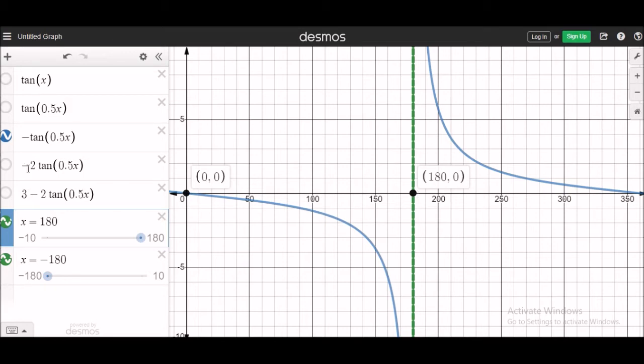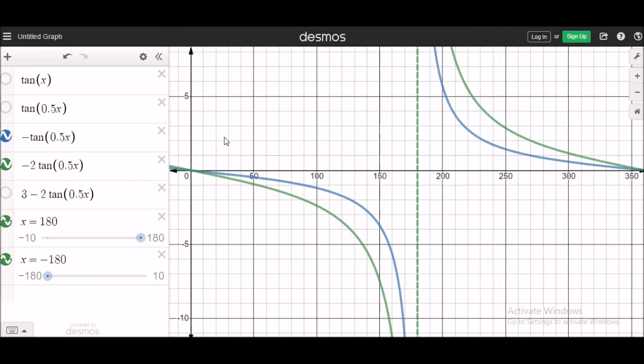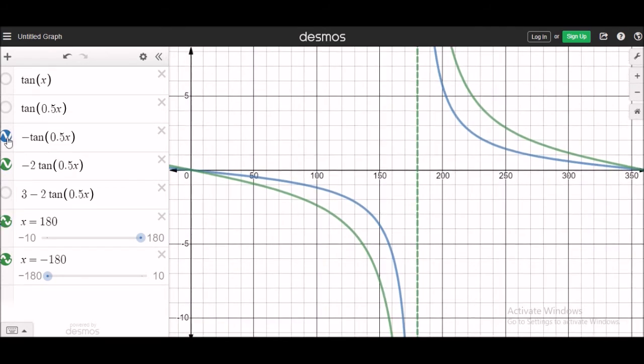Next, you are having 2 being multiplied to the tangent graph. So what happens? Can you see the transition? So this is not changing the shape drastically. So even if you multiply it with a 3 in front or 4 in front, no much changes will happen.